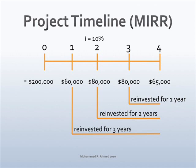To compute the modified internal rate of return (MIRR), you need to compute the future value of the cash flows for the project. Equate the cash outflows to the future value of cash inflows to solve for the interest rate. The cash flows on the timeline are: negative $200,000 on period zero, $60,000 on year 1, $80,000 on year 2, $80,000 on year 3, and $65,000 on year 4.